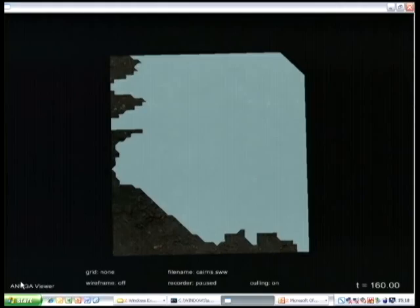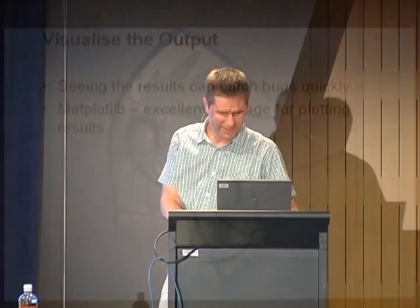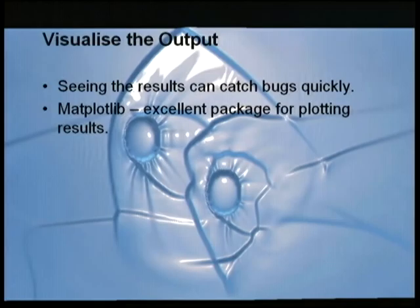With the inundation code, it's a numerical methods code — the water is represented by triangles, each triangle knowing the height of the water. For the earthquake model the output isn't movies, but there are packages such as matplotlib which are really good for graphing the output and producing maps.